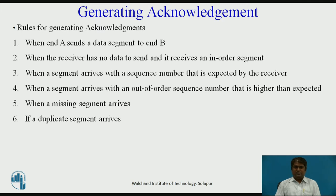The second rule: when the receiver has no data to send and it receives an in-order segment, and the previous segment has already been acknowledged, the receiver delays sending an ACK segment until another segment arrives or until a period of time has passed. The receiver needs to delay sending an ACK segment if there is only one outstanding in-order segment. This rule reduces ACK segment traffic.